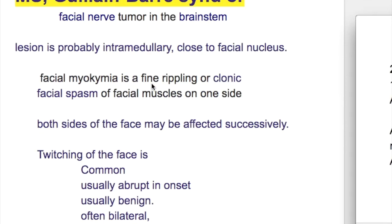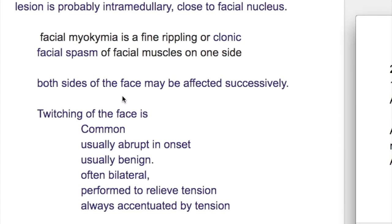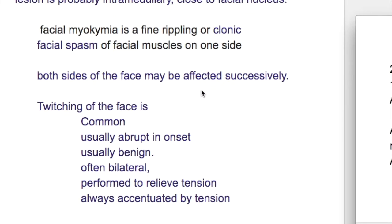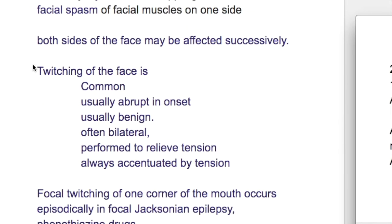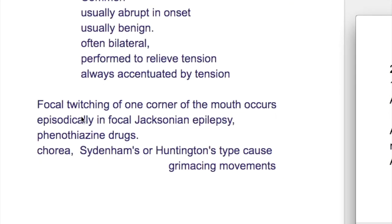Facial myochemia is a fine rippling or clonic facial spasm of facial muscles on one side. Both sides of the face may be affected successively. Twitching of the face is common, usually abrupt, benign and often bilateral. It is accentuated by tension.